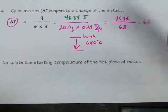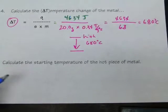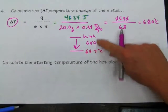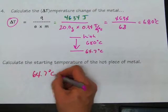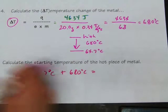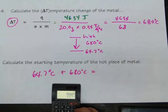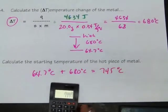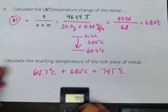The temperature of the metal dropped by 680 degrees Celsius. It ended at 64.7 degrees Celsius when it was in the calorimeter. So to find its starting temperature, we add back the temperature change: 64.7°C + 680°C, rounded to no decimal places, gives 745 degrees Celsius. That's how hot the piece of metal was before it went into the calorimeter — 745 degrees Celsius while it was in the fire.